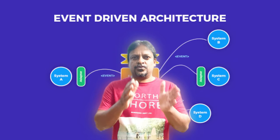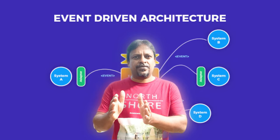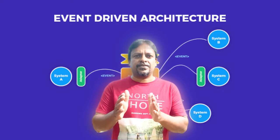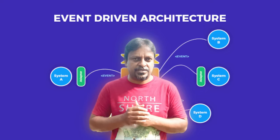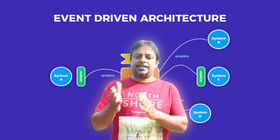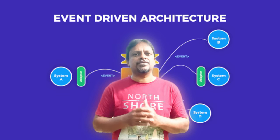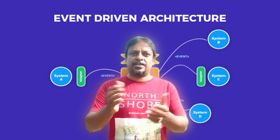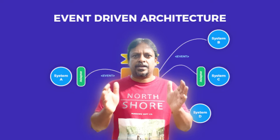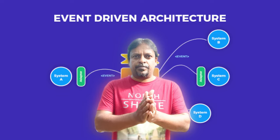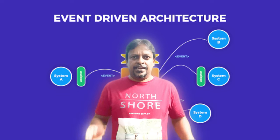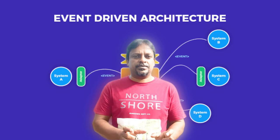So we have event one, event two, event three — these represent microservices. One request comes to the first microservice, the second microservice will serve the response, and that is also another event. This communication between two microservices happens through RabbitMQ or some other messaging tools.